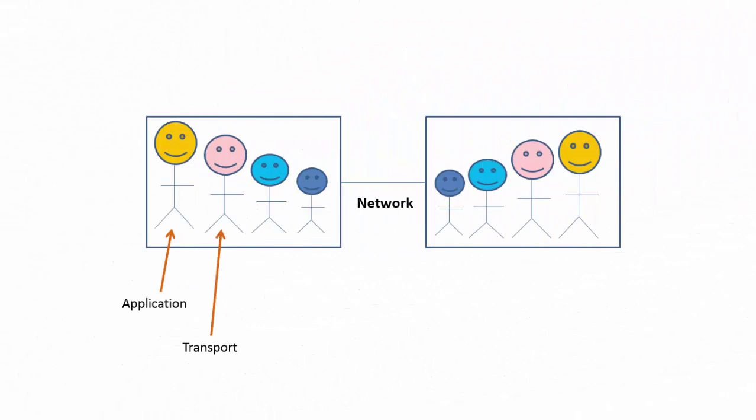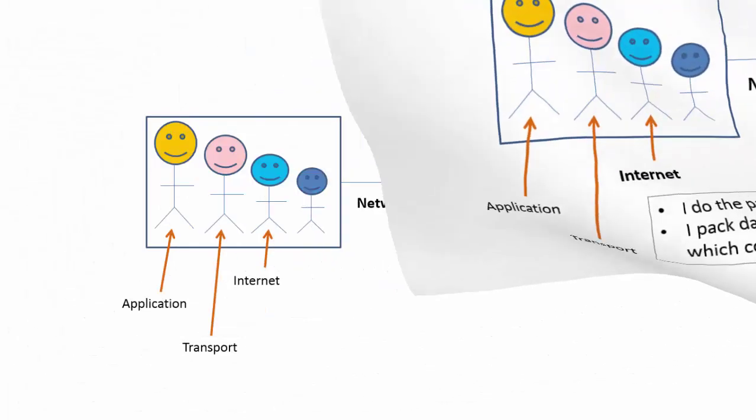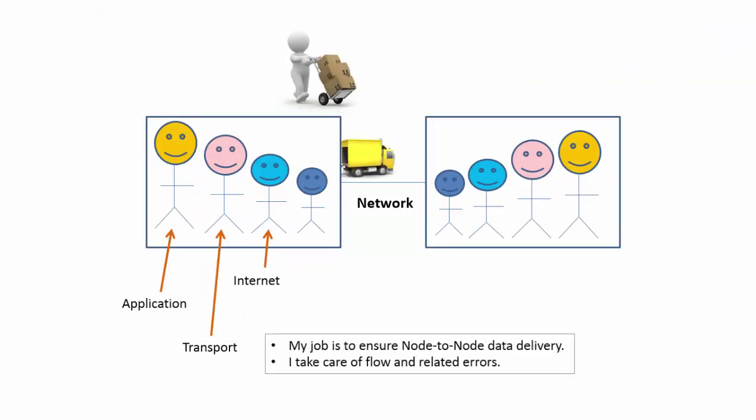Next layer takes care of packaging of transfer data. The data is divided into smaller data packets known as IP datagram, which contains source and destination IP addresses. This layer is called internet layer. Next layer ensures node to node delivery at hardware level. It takes care of the flow and related errors. This is called network access layer.